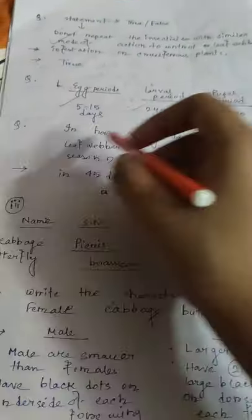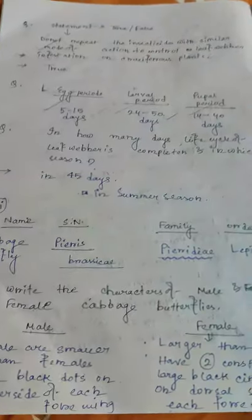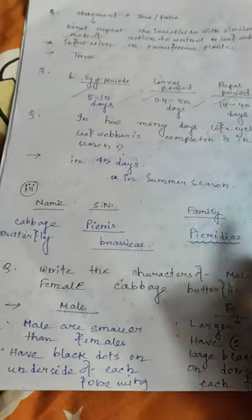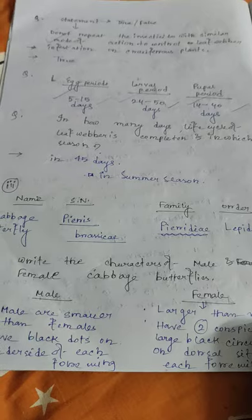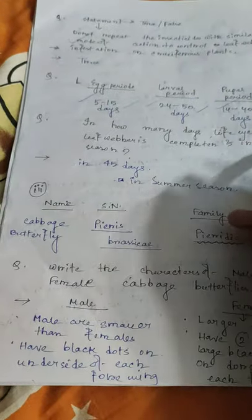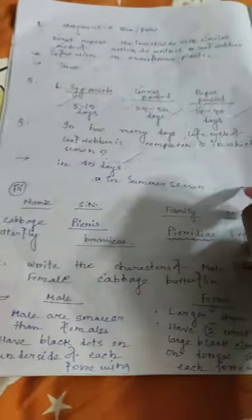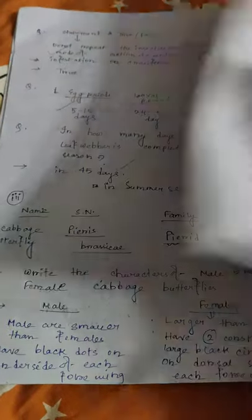Life cycle of leaf webber: egg period 5 to 15 days, larval period 24 to 50 days, pupal period 14 to 40 days. The complete life cycle is completed in 45 days during the summer season.